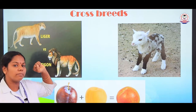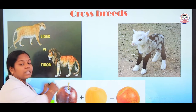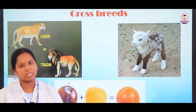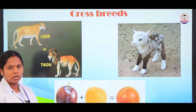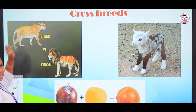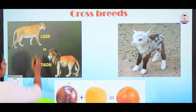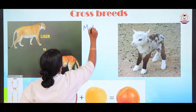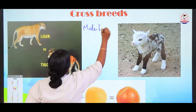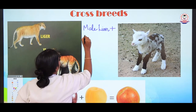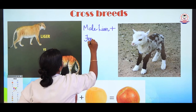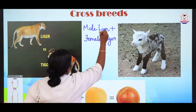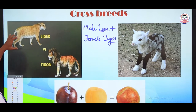How are cross breeds made? By crossing two different species. For example, when they cross a donkey and the horse, they got a mule. And one more example — liger. What is a liger? Liger is a combination of male lion and female tiger. This is the image of the liger.